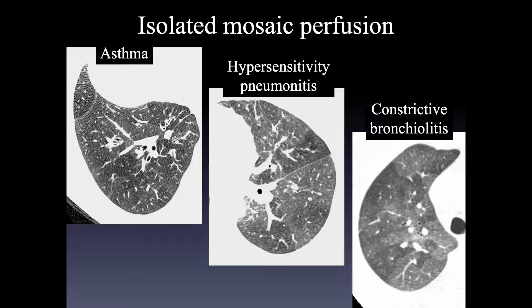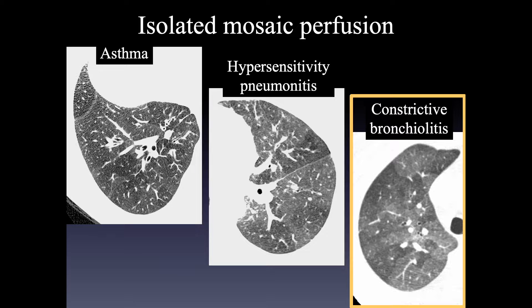The main differential diagnosis for isolated mosaic perfusion includes three etiologies: asthma, hypersensitivity pneumonitis, and constrictive bronchiolitis. Constrictive bronchiolitis encompasses a fairly high percentage of patients, so let's talk a little bit about what that means.